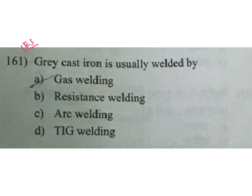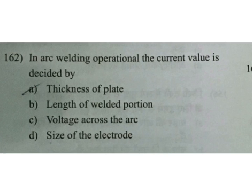In arc welding, the current value is decided by the thickness of the plate. But the official answer is the size of the electrode rod. Here I am having some doubt — I think the answer is A.